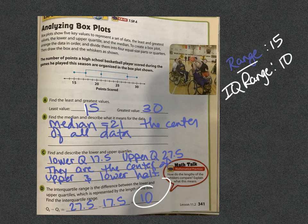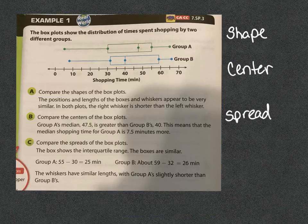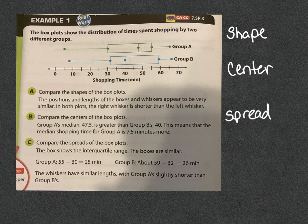So then they go on to ask us to compare two box plots to each other. In the previous lesson we compared dot plots, and we used the shape, center, and spread of those to compare them. You're going to do the same thing with box plots — the shape, center, and spread.